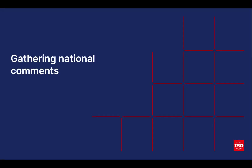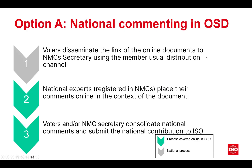For gathering national comments: once we've recognized we can find these documents in ISO projects, what is happening to get the document out and available to your national mirror committees? For option A, national commenting in the OSD, the first step is the same as before — voters disseminate the link of the online document to national mirror committee secretaries using their usual member distribution channels. You'll be distributing a link to the online document rather than a PDF document. This is the one part that's a little bit different.